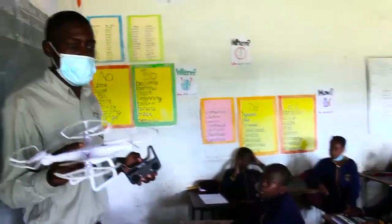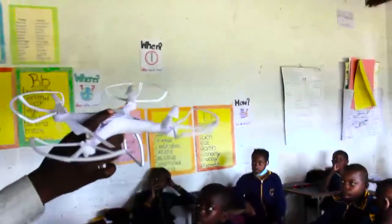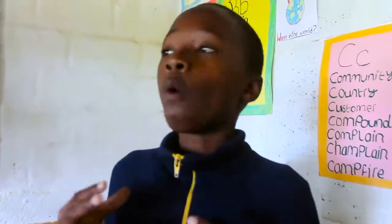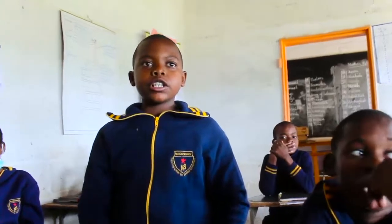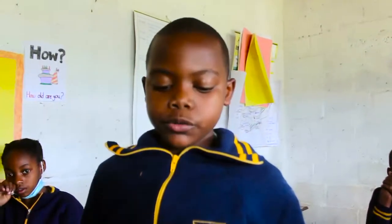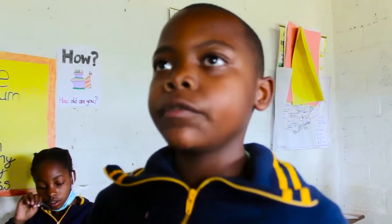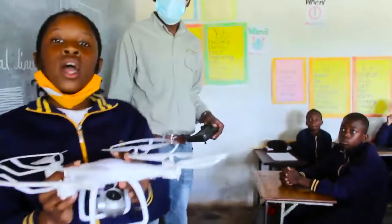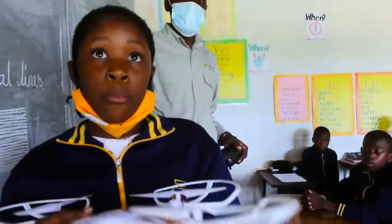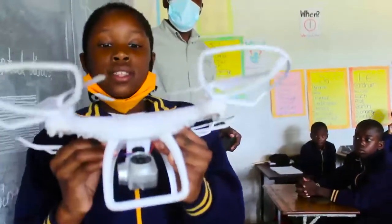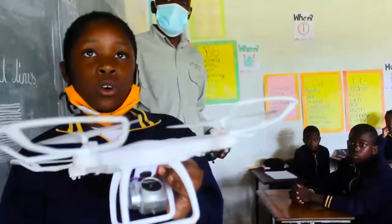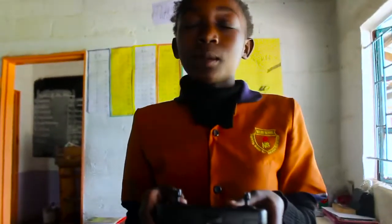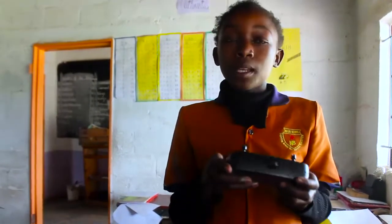We also learned about drones and what we can use drones for in agriculture. Drones are used for taking pictures in the farm and for mapping a farm. If you have a big farm and can't see where the animals are, you can use a drone to take pictures. You can also send a drone to see what is happening on the other side of a large farm, and view the pictures on your phone via Wi-Fi.